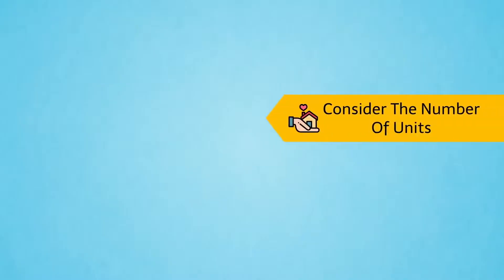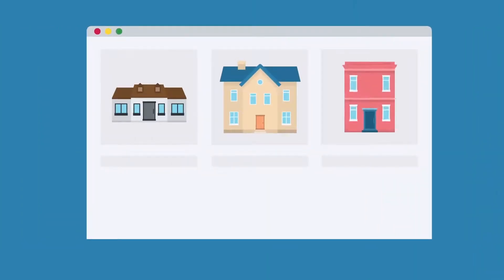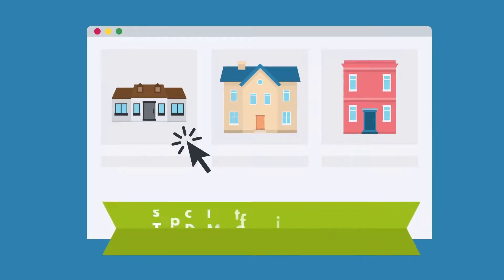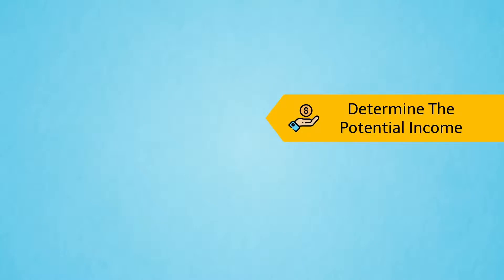Once you find a multifamily property in a great location, you need to consider the number of units in the property as well as the number of rooms in each unit. Investors should focus on duplex, triplex, and fourplex multifamily properties. These types typically offer the most return with the least amount of risk and are generally more affordable.